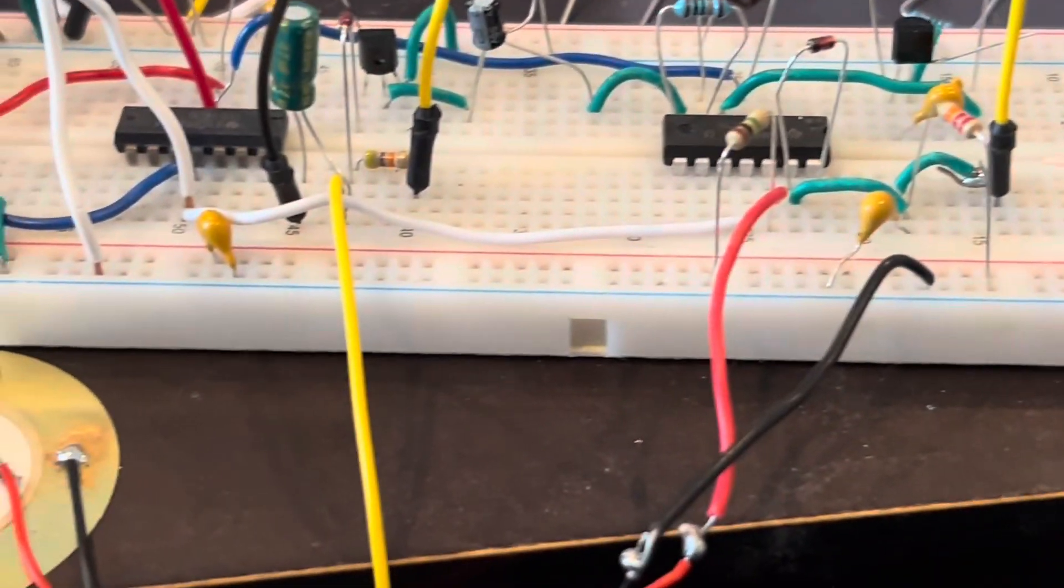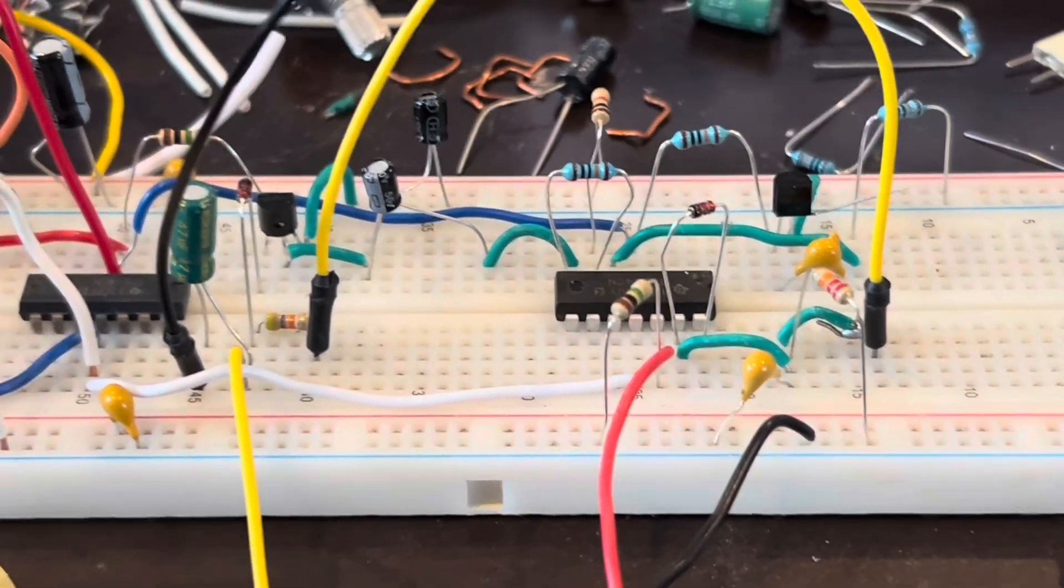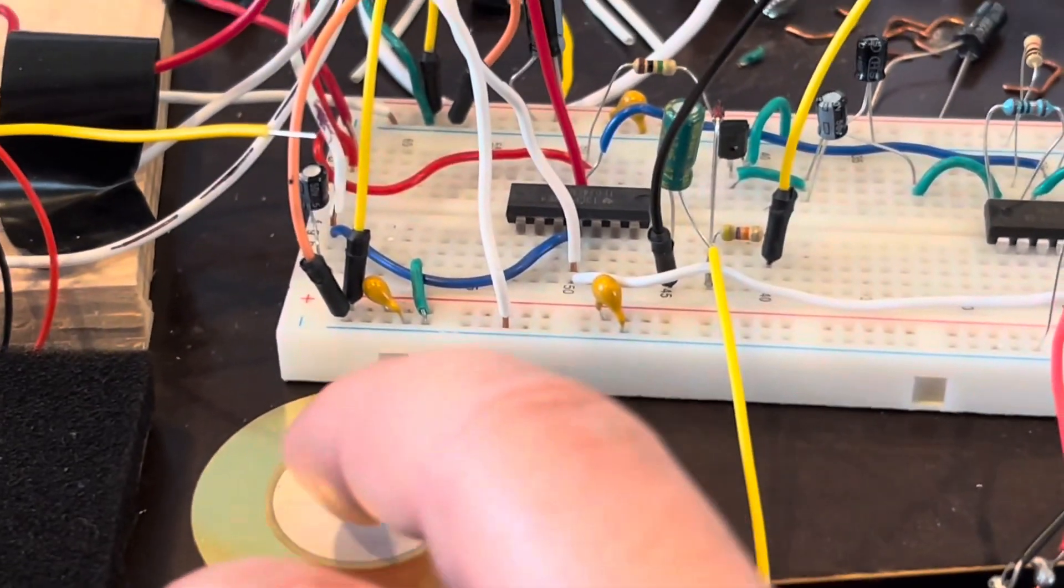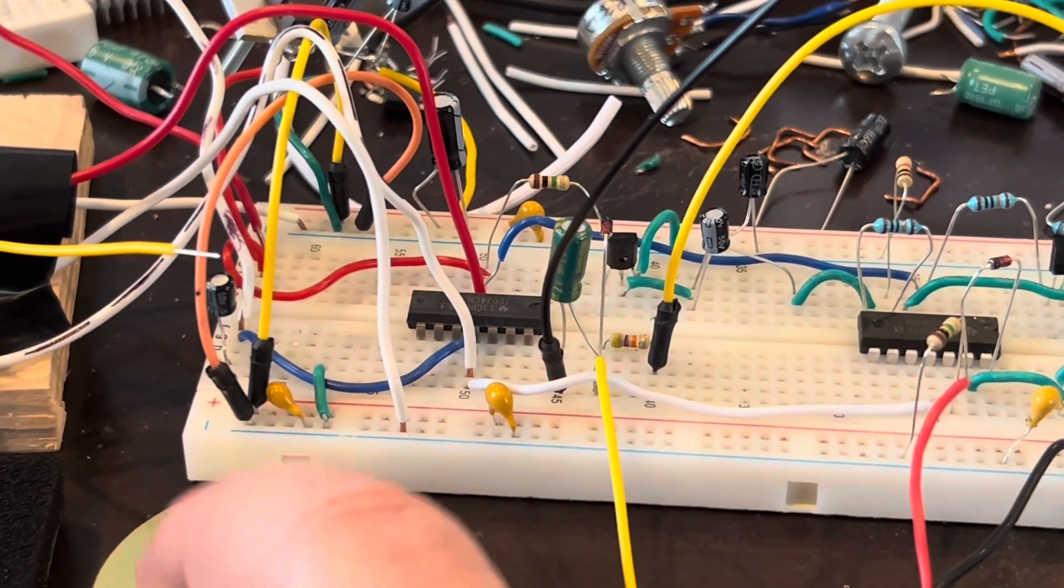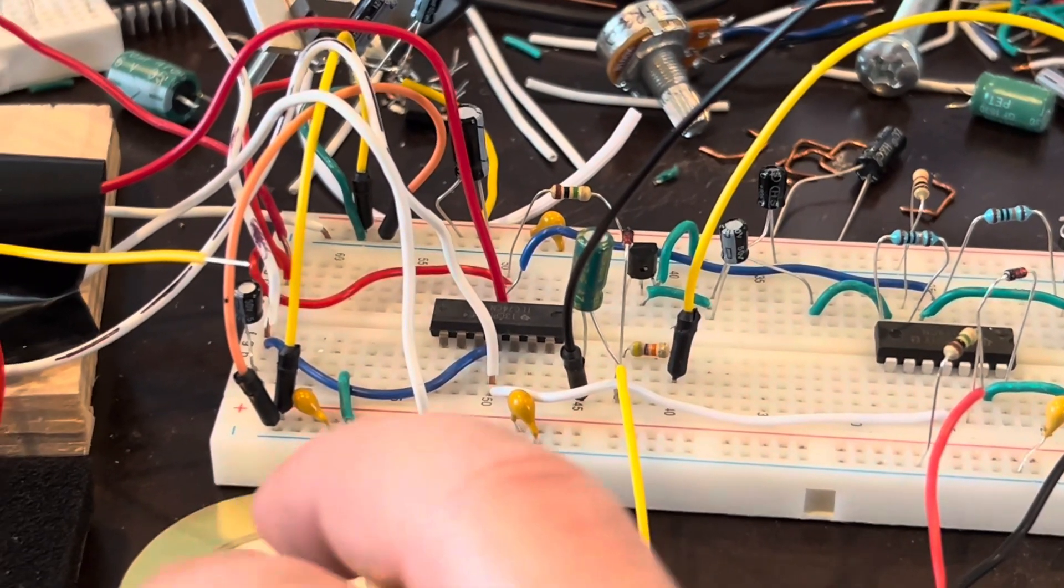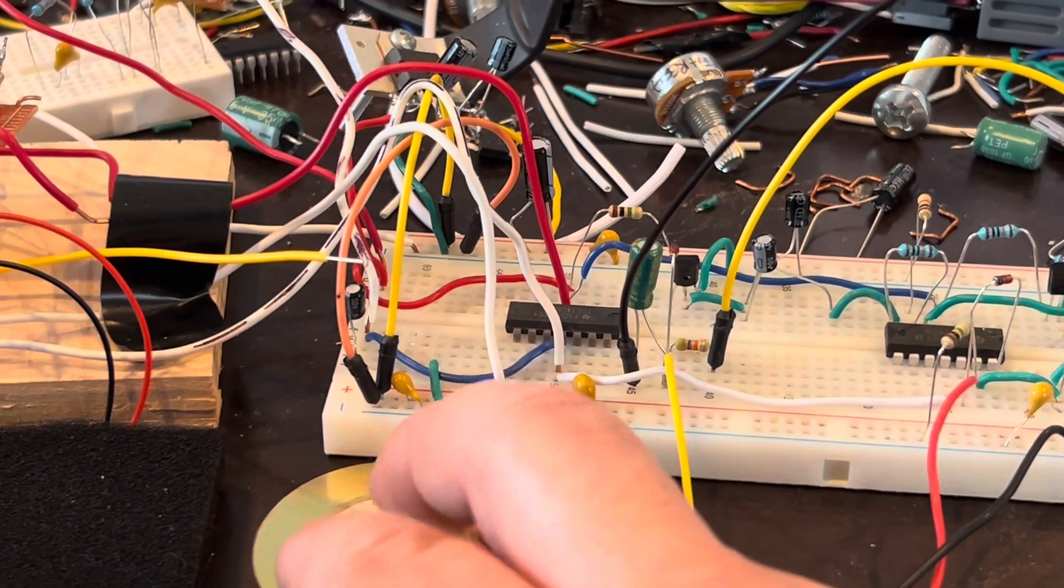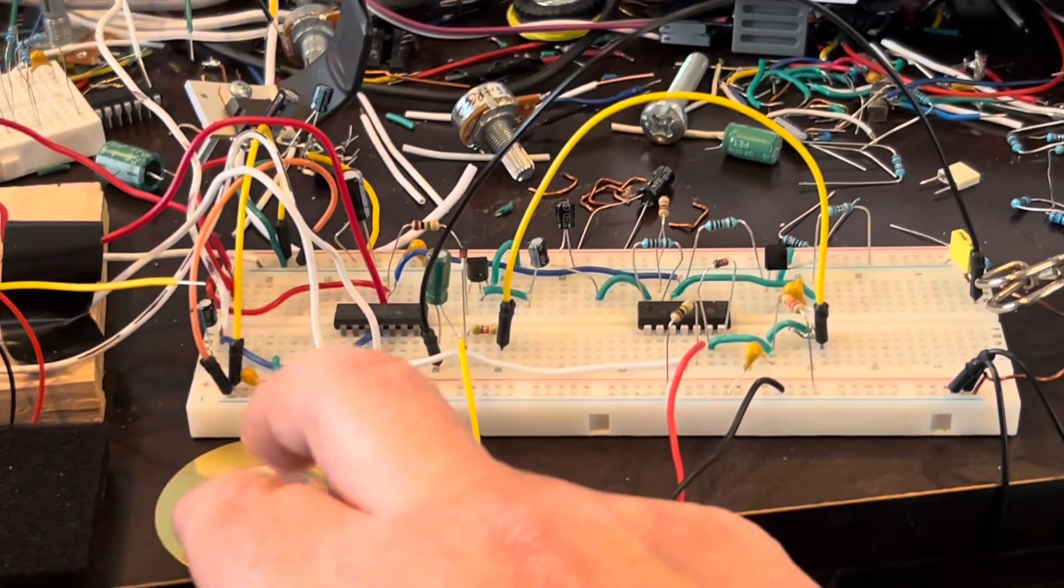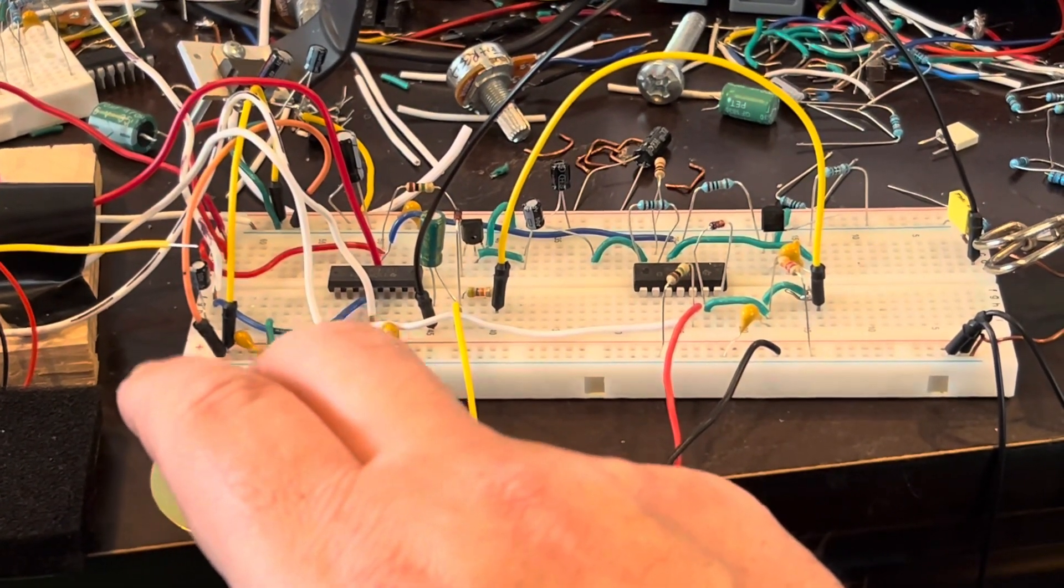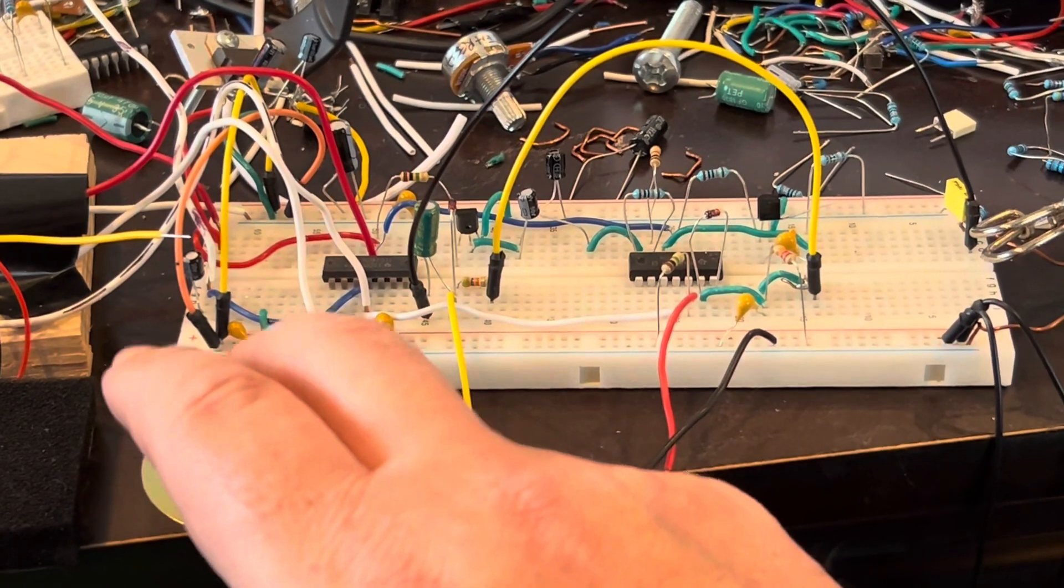And a 10 microfarad capacitor here and a 20k resistor there for the decay. And this is the sound. And you can make it sound like you're rolling on the snare drum. Sounds good to me. Thanks for watching.